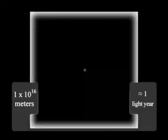Now, going out to 10 to the 16 meters from the Sun, which is about one light year, our own Sun is now becoming pretty faint, and yet there's still no other stars visible.